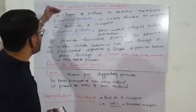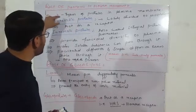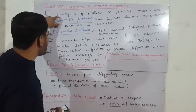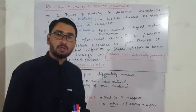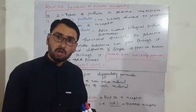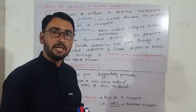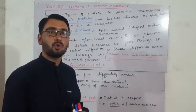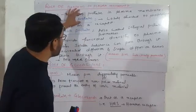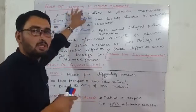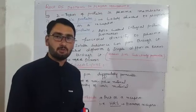Regarding the role of protein, there are two types of proteins: extrinsic and intrinsic protein. The intrinsic protein has two categories — partially embedded or totally embedded protein. Extrinsic protein is loosely attached to the head of phospholipids.